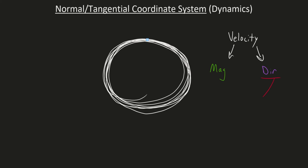My velocity vector at this point is here, at this point is here, at this point is here, and so on. Notice that I'm keeping the lengths of these velocity vectors the same — that symbolizes that my speed, the magnitude, is staying the same. But since the direction of my velocity is changing, this particle will be accelerating.